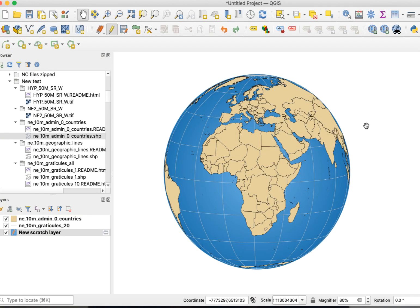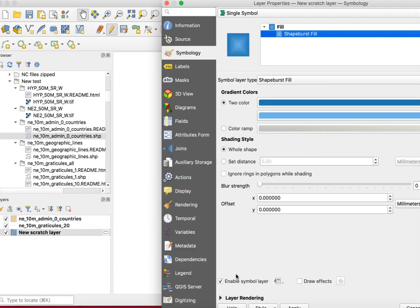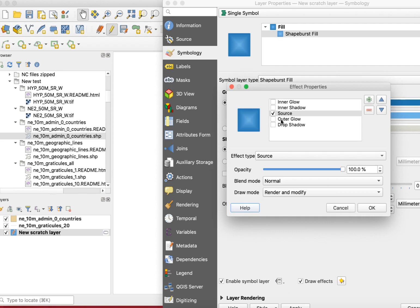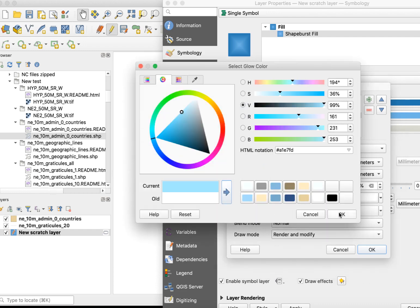You can also add a little atmosphere to your globe if you want to get fancy. To do this, we'll add an effect to the scratch layer. Double-click on the layer to open layer properties, click on shapeburst fill, then check the draw effects box and click on the star icon. Check the box for outer glow, set the spread to 10 as a starting point, and select a color.